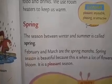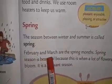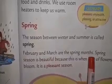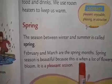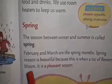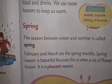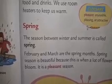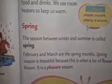Next season — spring season. The season between winter and summer is called spring. February and March are the spring months. Spring season is beautiful because this is when a lot of flowers bloom. It is a pleasant season. Pleasant means enjoyable, pleasant or attractive.